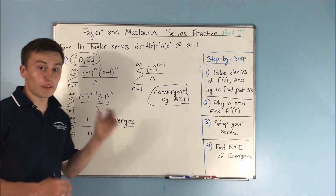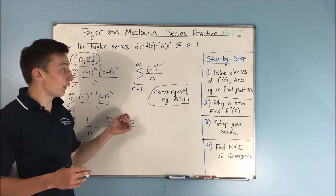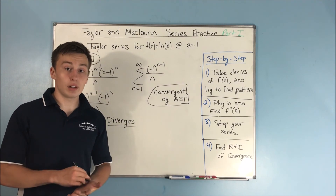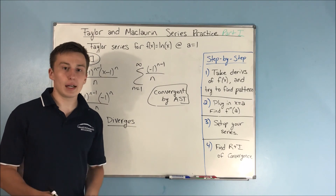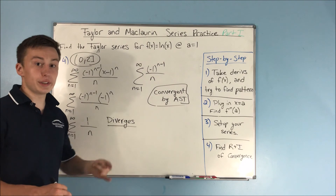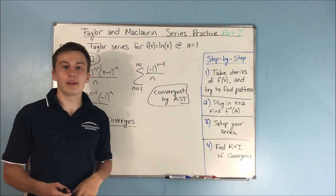So the interval of convergence is from 0 to 2, not including 0 but including 2. And of course, our radius of convergence is 1. If the converging and diverging stuff is still confusing you — if you're not sure how this converges by the alternating series test — you really want a solid foundation for this. I'd recommend checking out the videos I've done on converging and diverging series. That'll help you understand checking your endpoints and do it a lot quicker. So that's going to do it for this video. If it helped you, make sure to leave a like and subscribe.